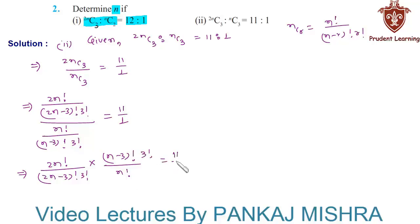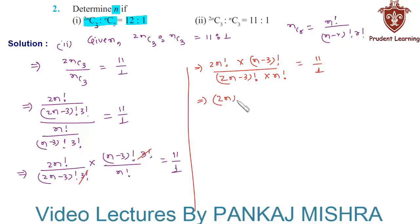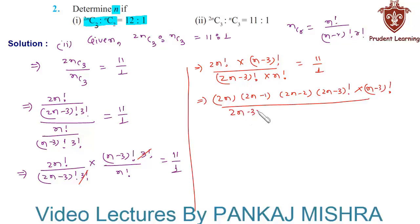nC3 is equal to n factorial over (n minus 3) factorial into 3 factorial, is equal to 11 upon 1. Here we can cancel 3 factorial from numerator and denominator. We can write the left hand side as 2n factorial into (n minus 3) factorial over (2n minus 3) factorial into n factorial is equal to 11 upon 1. Now 2n factorial can be written as 2n into (2n minus 1) into (2n minus 2) into (2n minus 3) factorial, keeping (n minus 3) factorial as such.